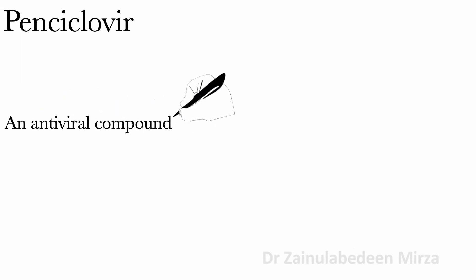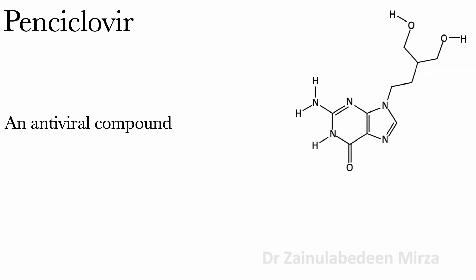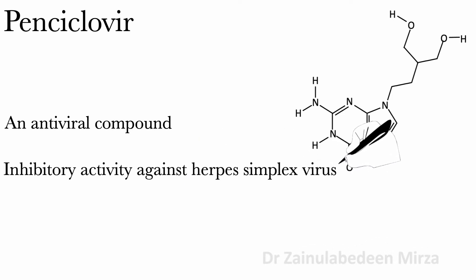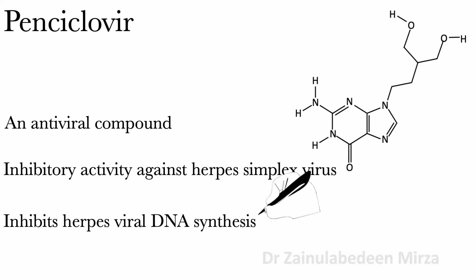Bin cyclophere is an antiviral compound that has inhibitory activity against herpes simplex virus HSV-1 and HSV-2. Bin cyclophere selectively inhibits HSV competitively with the oxyguanacine triphosphate. Herpeviral DNA synthesis and replication are selectively inhibited.